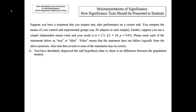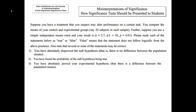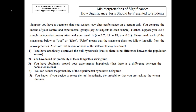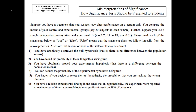The six statements were: One — you have absolutely disproved the null hypothesis. Two — you have found the probability of the null hypothesis being true. Three — you have absolutely proved your experimental hypothesis. Four — you can deduce the probability of the experimental hypothesis being true. Five — you know, if you decide to reject the null hypothesis, the probability that you are making the wrong decision. Six — you have a reliable experimental finding in the sense that if the experiment were repeated a great number of times, you would obtain a significant result on 99% of occasions.